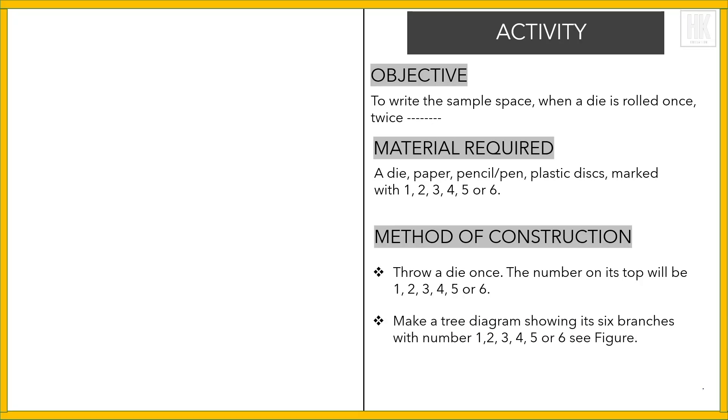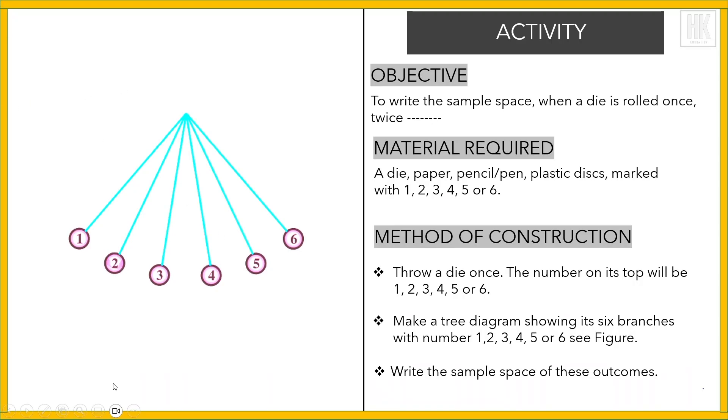Showing its six branches with the numbers 1, 2, 3, 4, 5, 6. See the figure. Now these are the six branches. Write the sample space of this outcome. Sample space will be 1, 2, 3, 4, 5, 6.